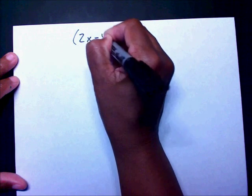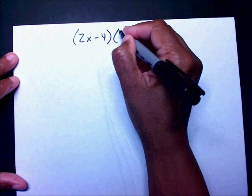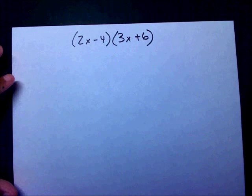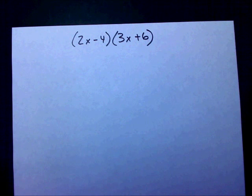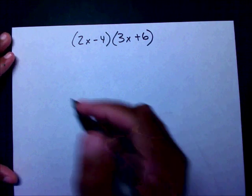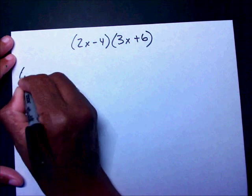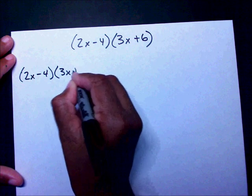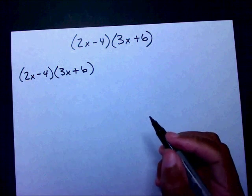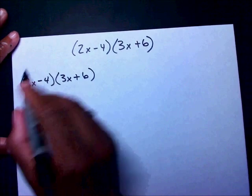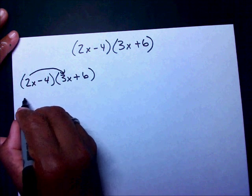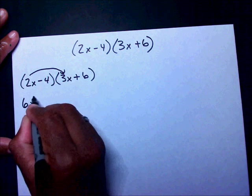I have 2x minus 4 times 3x plus 6. I'm going to show you two different methods, and you decide which one you like to use. I'm going to take this first term and multiply it times the first term on the second polynomial. So 2x times 3x is 6x squared.